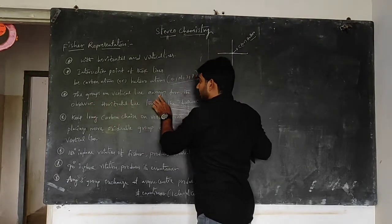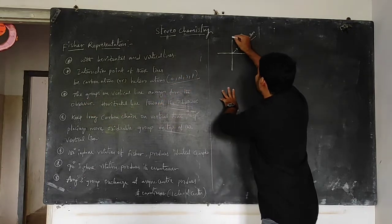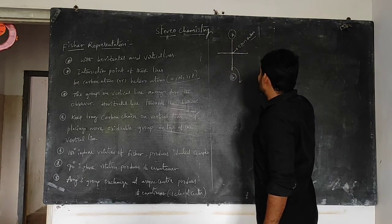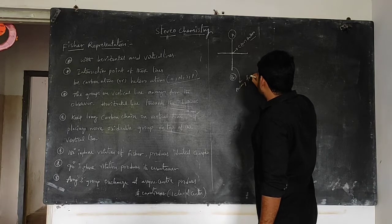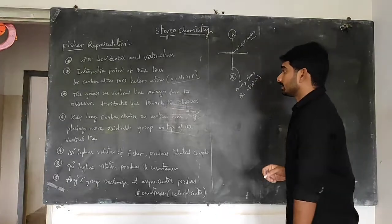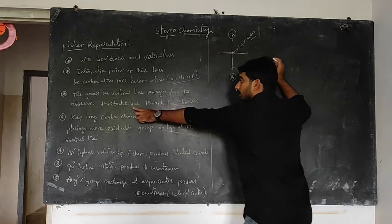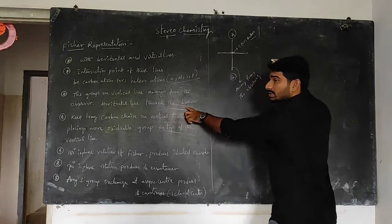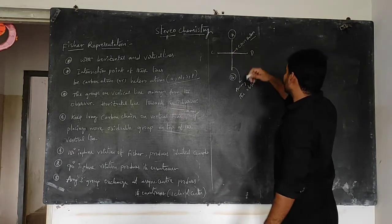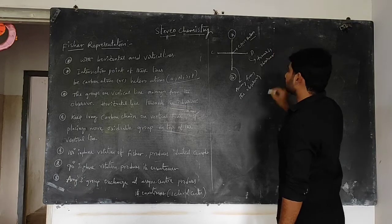The second point: groups on the vertical line are away from the observer. So if groups A and B are on the vertical line, they are away from the observer. The groups on the horizontal line — say C and D — are towards the observer.